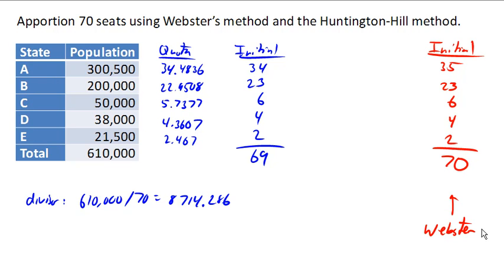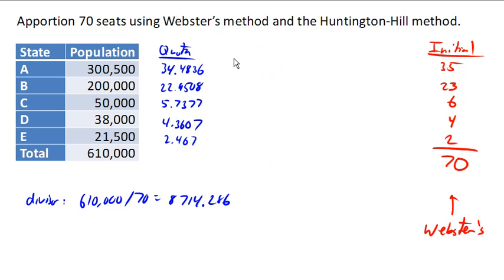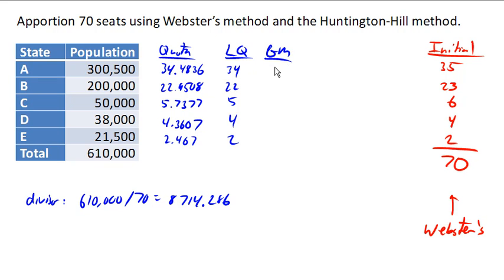Now let's use Huntington-Hill's method. Huntington-Hill method would have started out the same way, coming up with the quota. But then once we had the quota, we would have found the lower quotas and the geometric means — remember by taking the square root of, like here, 34 times 35.